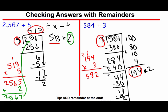And my last step now is to add in that remainder. So I have a remainder of 2 over here. So I'm going to add that in. 582 plus 2 is going to be 584. And if that number matches this number, I know that I did the problem correctly. And it does.